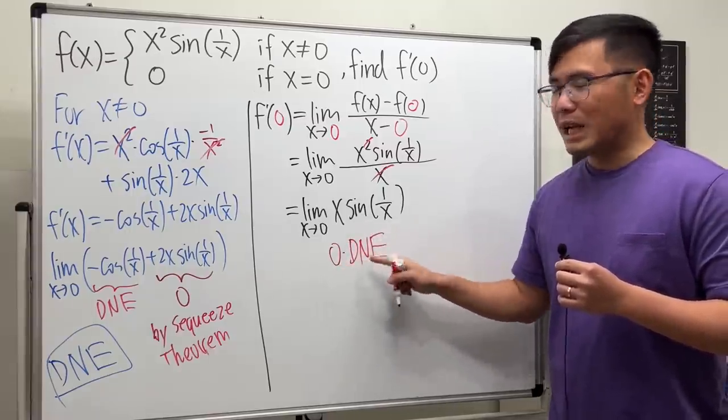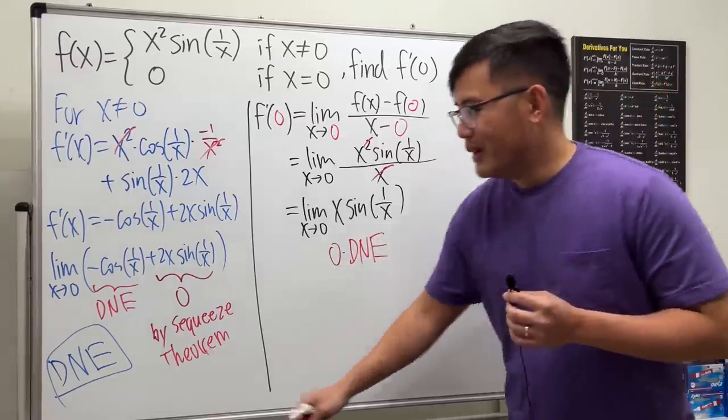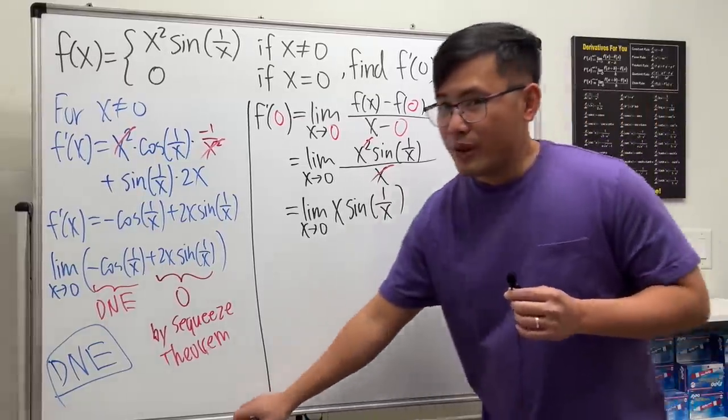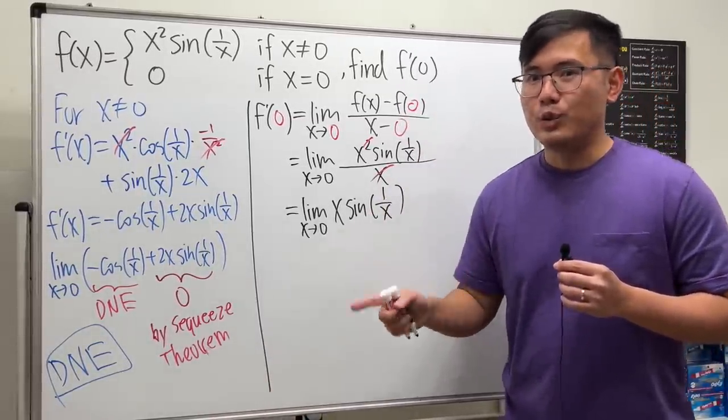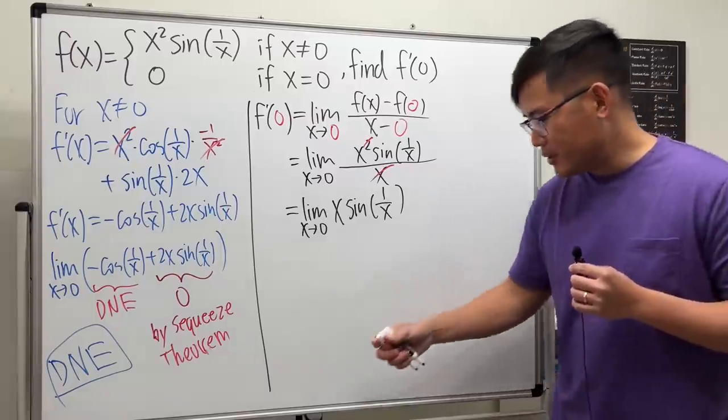But you cannot just say 0 times DNE is 0. No. Don't do that. That's bad. Whenever this kind of thing happens, sine cosine, we will use the squeeze theorem for this kind of situation. Let me show you how to write that down.